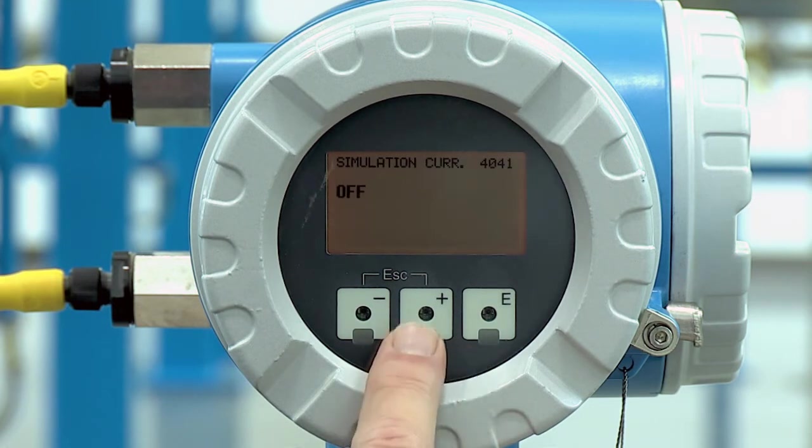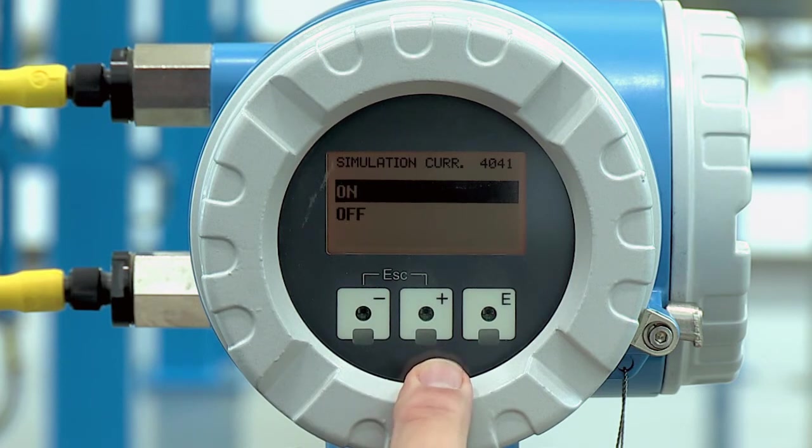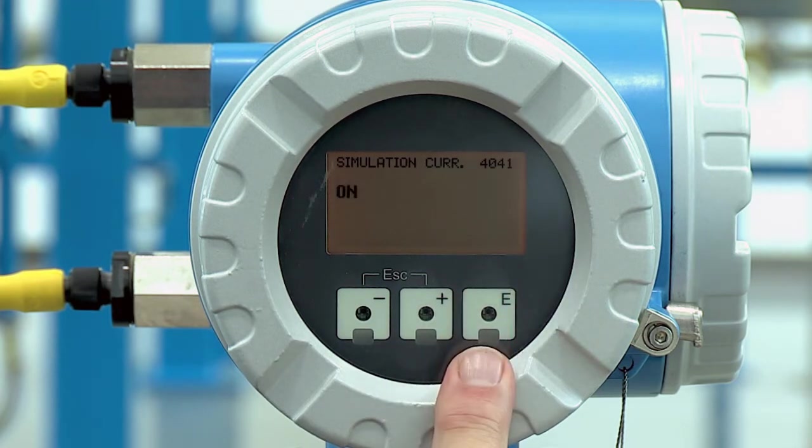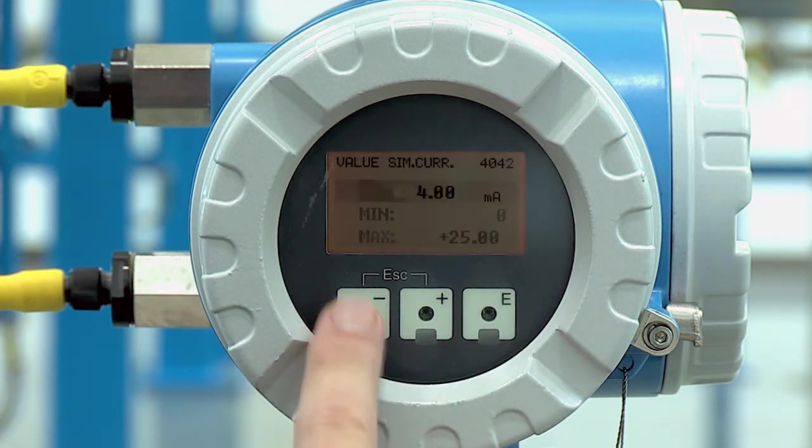Here we just then hit the plus so we turn the simulation current on, enter again, and we can put in any value from 4 to 20 milliamps we want.